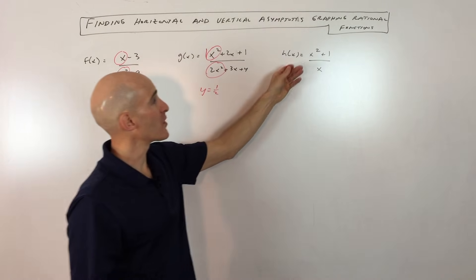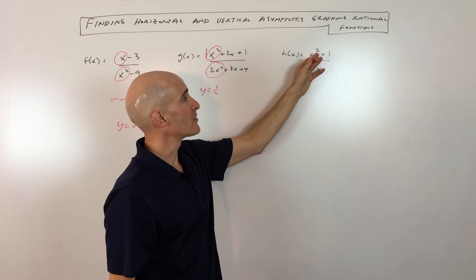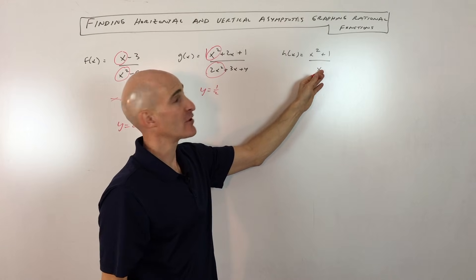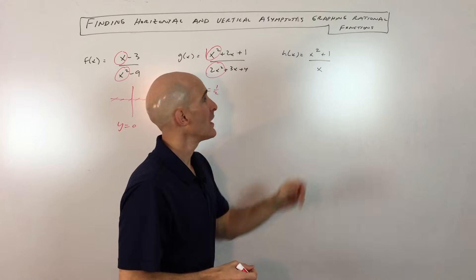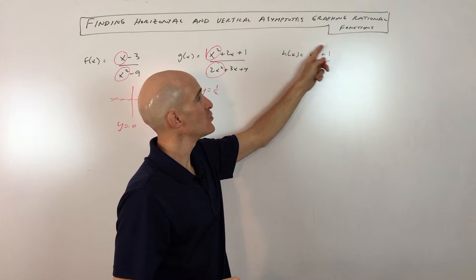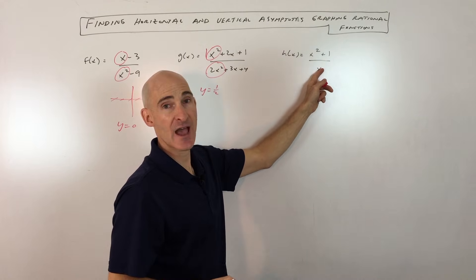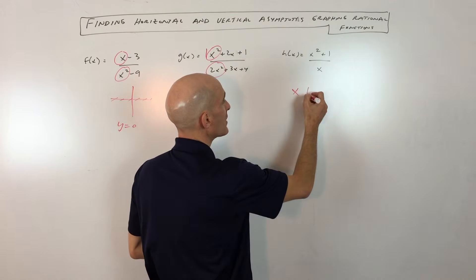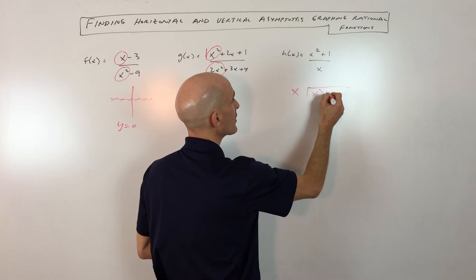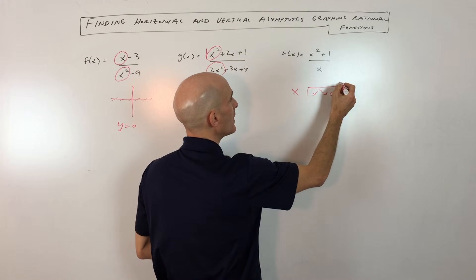And then the third scenario is where the degree in the numerator is greater than the degree in the denominator. Here's where we get a slant or an oblique or a diagonal asymptote. The way you would do that is you would take this numerator and divide it by the denominator. You could just do the long division and you're going to get the equation of the slant asymptote. For this one, x is going into x squared plus 0x plus 1.